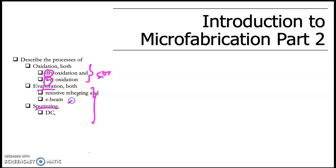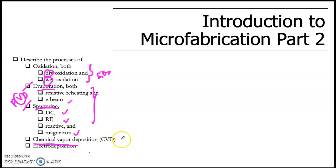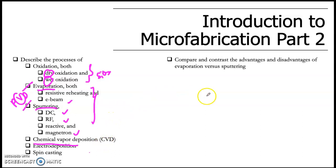Evaporation can be done by e-beam or resistive heating. Another method is sputtering, where we bombard ions in order to deposit the material. There are four types of sputtering methods: the first is RF, and then magnetron sputtering. Both evaporation and sputtering are called physical vapor deposition — the source is vaporized. The other approach is chemical vapor deposition, where we use chemical solutions to deposit the material. The last method is electrodeposition. We'll see the advantages and disadvantages of evaporation and sputtering.